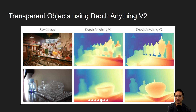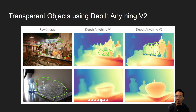For transparent objects, the top row shows containers holding candies — V1 tends to look inside the containers, whereas V2 treats them as whole objects. On the bottom row with containers on a table, V1 sees parts inside the container, which is undesirable, but V2 treats the surface as a completely solid object. Overall, V1 tends to look inside transparent surfaces while V2 sees them as objects.